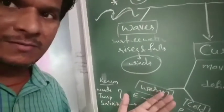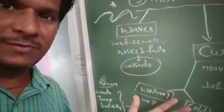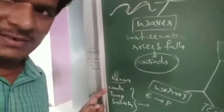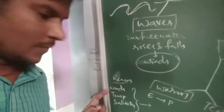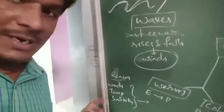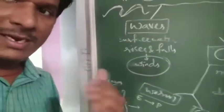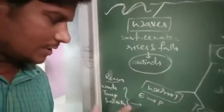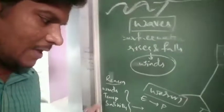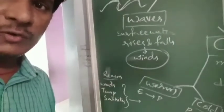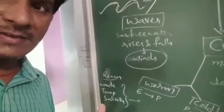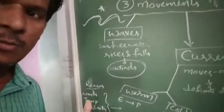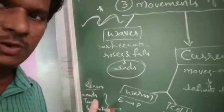The reasons for these movements of ocean surface water include winds, which particularly affect the water. Temperature variations — sometimes high, sometimes low — and salinity differences — high salinity and low salinity — are also reasons why we have these movements of ocean water.